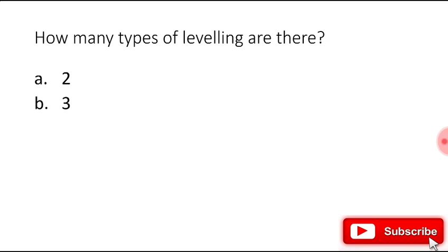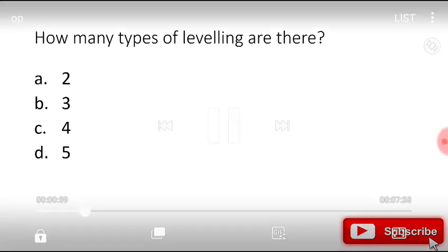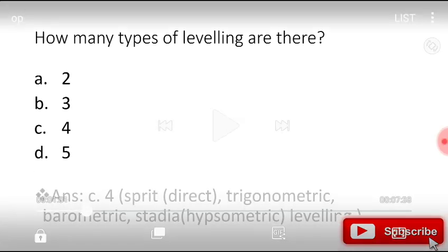How many types of leveling are there: two, three, four, or five? The right answer is four. They are: spirit or direct leveling, trigonometric leveling, barometric leveling, and stadia or hypsometric leveling.